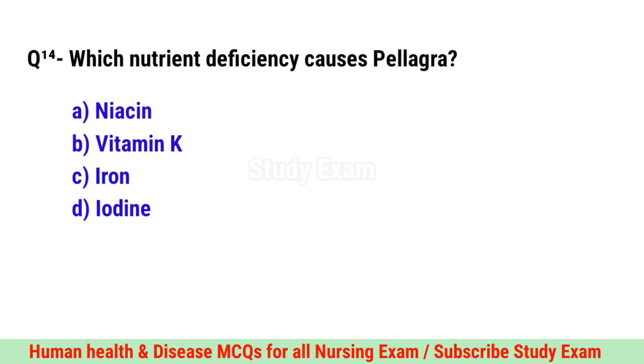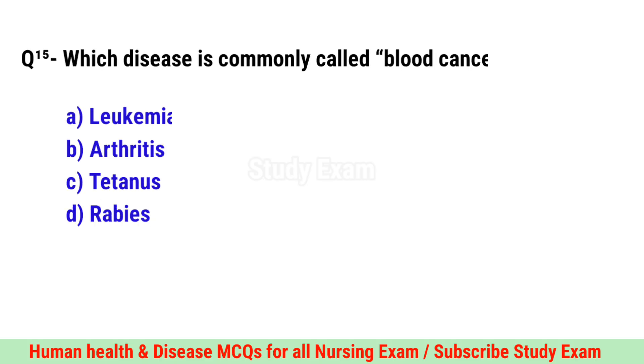Question No. 14. Which nutrient deficiency causes pellagra? Correct option is A. Niacin.